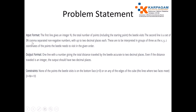The second line is a set of 3N comma-separated non-negative numbers with up to two decimal places each. These are to be interpreted as groups of three as the X, Y, Z coordinates of the points the beetle needs to visit in the given order. Output format: one line with a number giving the total distance traveled by the beetle accurate to two decimal places, always shown with two decimal places.